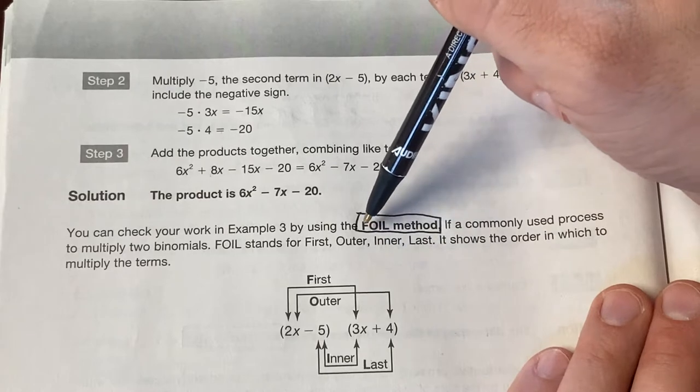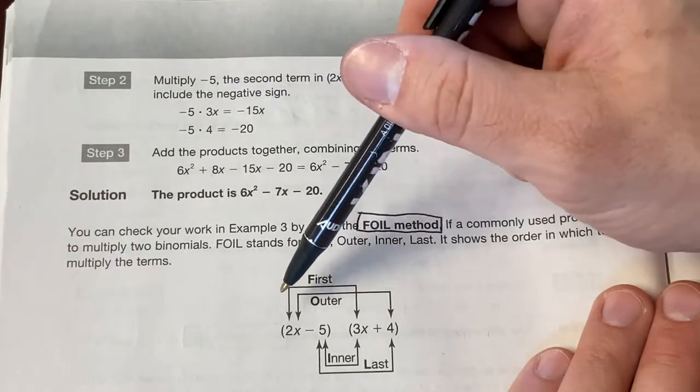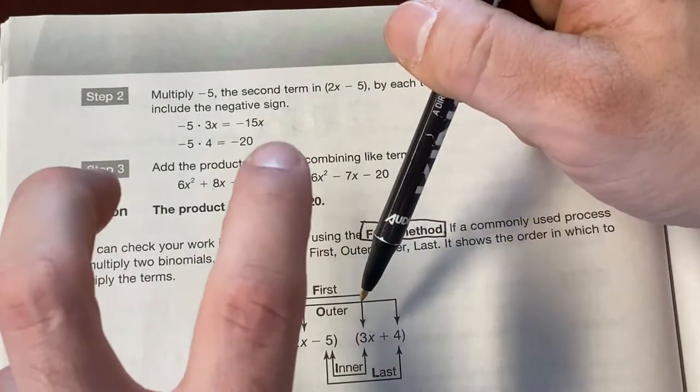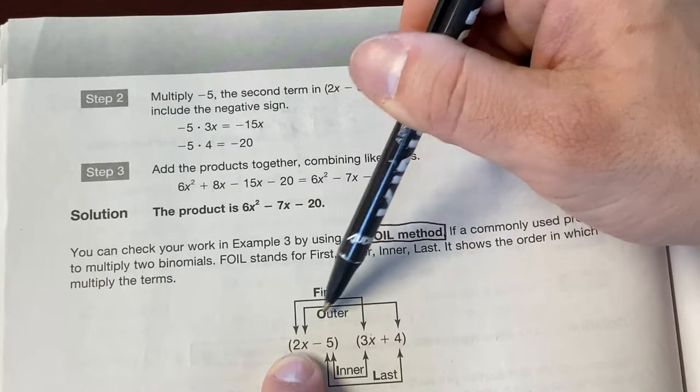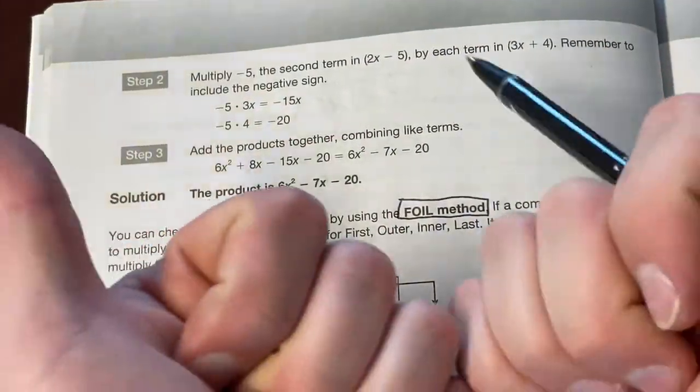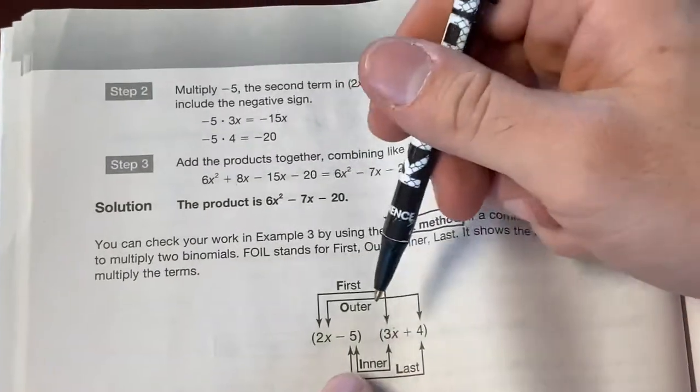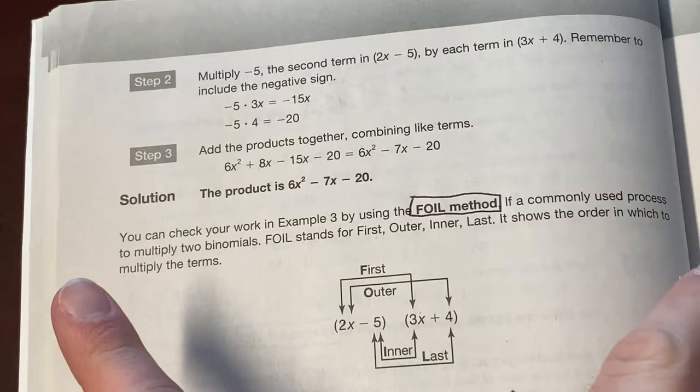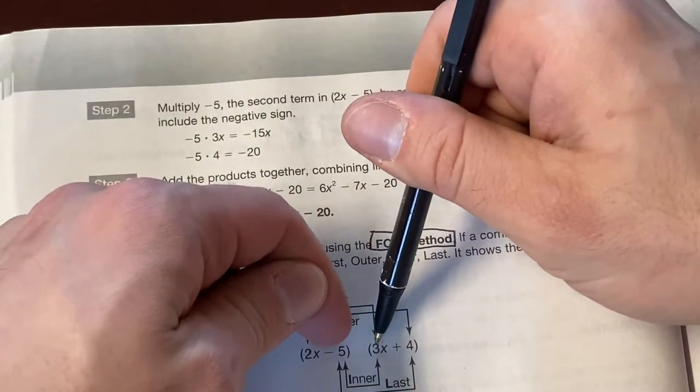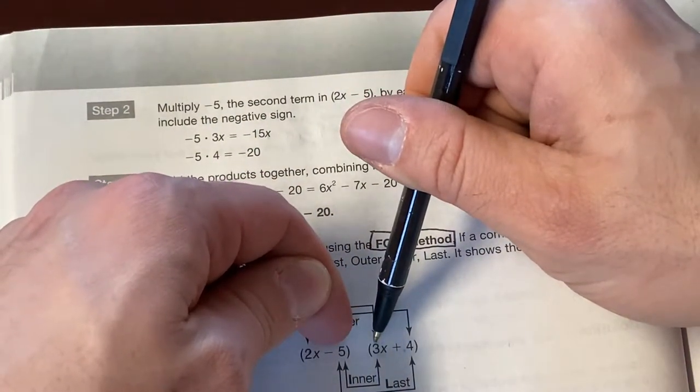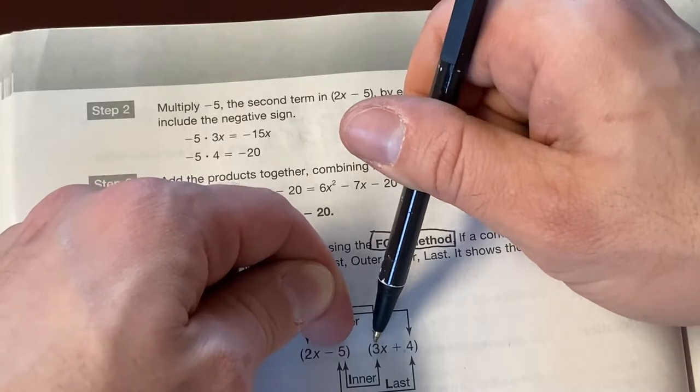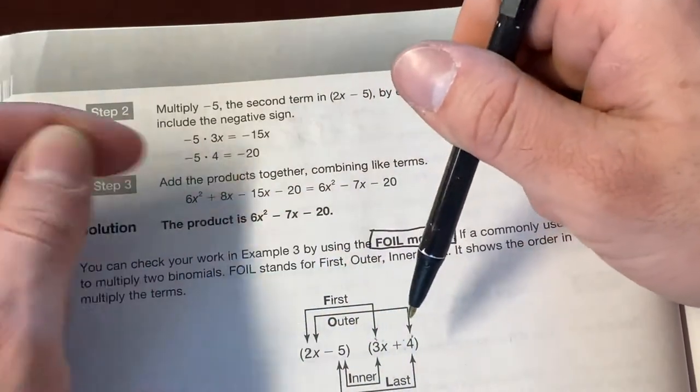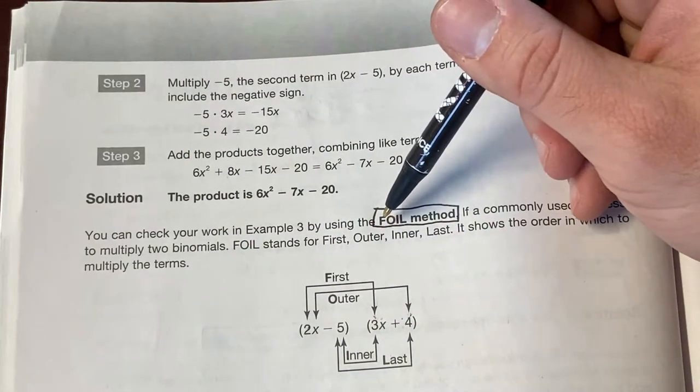Well, it's just an acronym for you to remember that you multiply the firsts, okay? The 2x and the 3x, they were quote-unquote first in both binomials. Then we did the outers. Outer, right? Outers, okay? I can't fit my hands on the screen. But 2x and 4 were the outer numbers. They were on the outsides. Then what did we do next? We did the inners. The negative 5 and the 3x, they were on the insides. Then we did the lasts. Negative 5 and 4 were the last ones written in both binomials. That is a very famous acronym for what we just did.